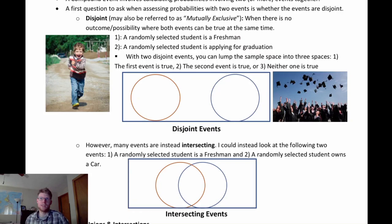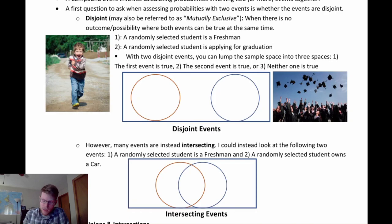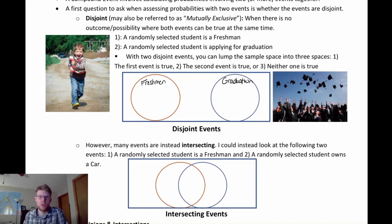As an example, we have two events: one is that a randomly selected student is a freshman, and the second is that a randomly selected student is applying for graduation. These are going to be disjoint events because we're not going to find a student who would say yes to both. We might think of the sample space as having two non-overlapping bubbles inside a rectangle representing everyone, with some students outside either circle.